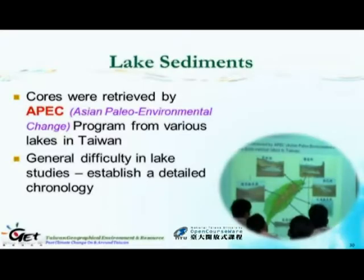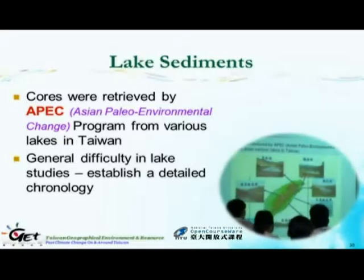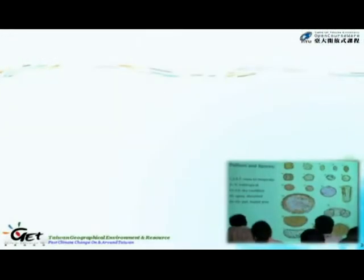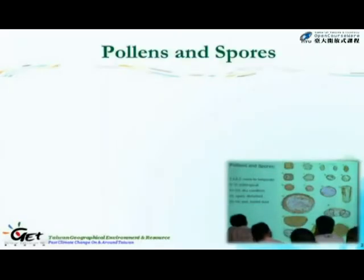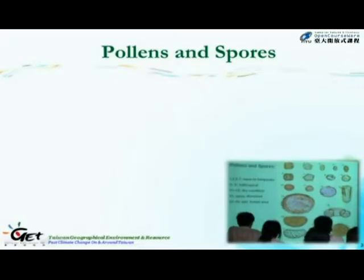For lake sediments, if you're lucky enough to have layers, you can have a relative timescale, but for absolute timescale it's not that easy to establish. The most common materials from lake sediments are pollens and spores. These are photos under microscopes of common pollens and spores. If you see types 1, 2, 6, 7, it means this place is warm to temperate. If you see 3, 4, 5, it means it's a subtropical area. And if you see 11, 12, 13, it means the surroundings are pretty dry.